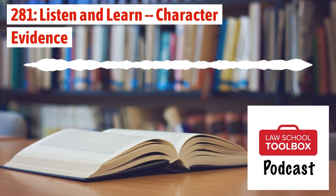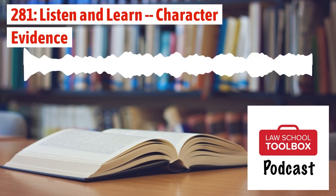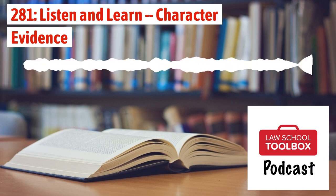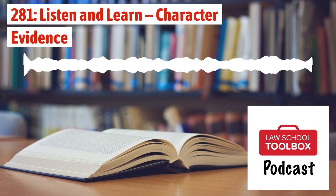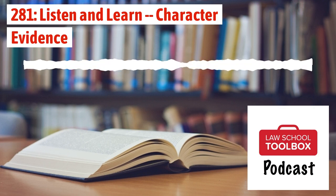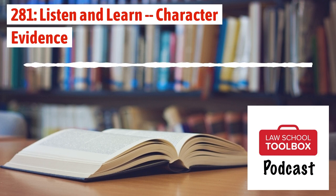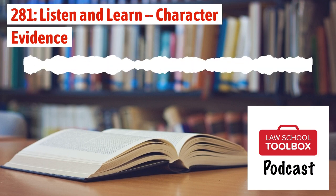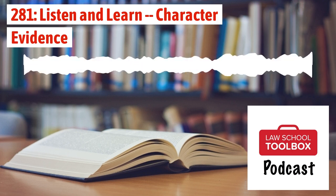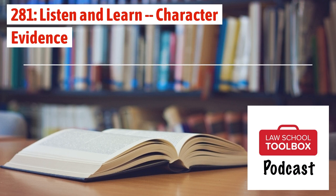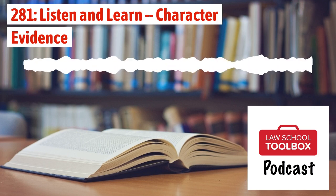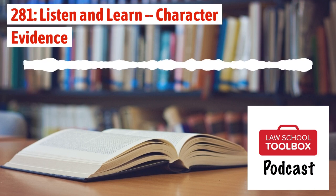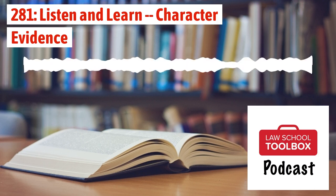Today we're talking about character evidence under the federal rules of evidence. This is an area of law that understandably confuses a lot of students. Part of this is because, like hearsay, the character evidence rule starts out in the negative and then opens up a universe of exceptions. Rule 404 tells us that character evidence is inadmissible to show propensity, meaning that it cannot come in to show that a person acted in conformity with a certain trait. And yet there are times when character evidence may come in for non-propensity purposes or in limited situations as circumstantial evidence of propensity.